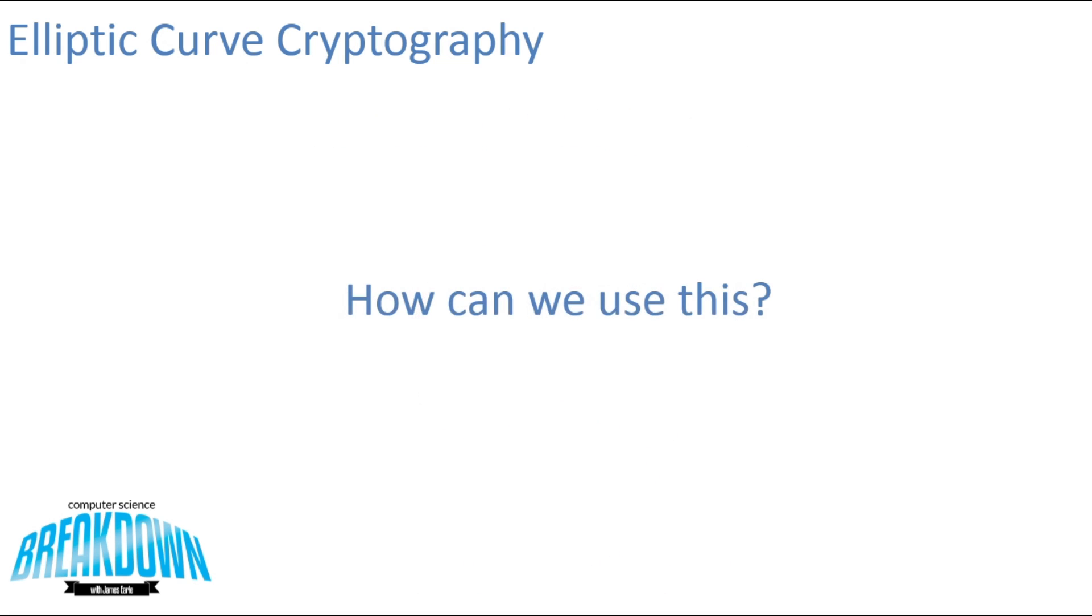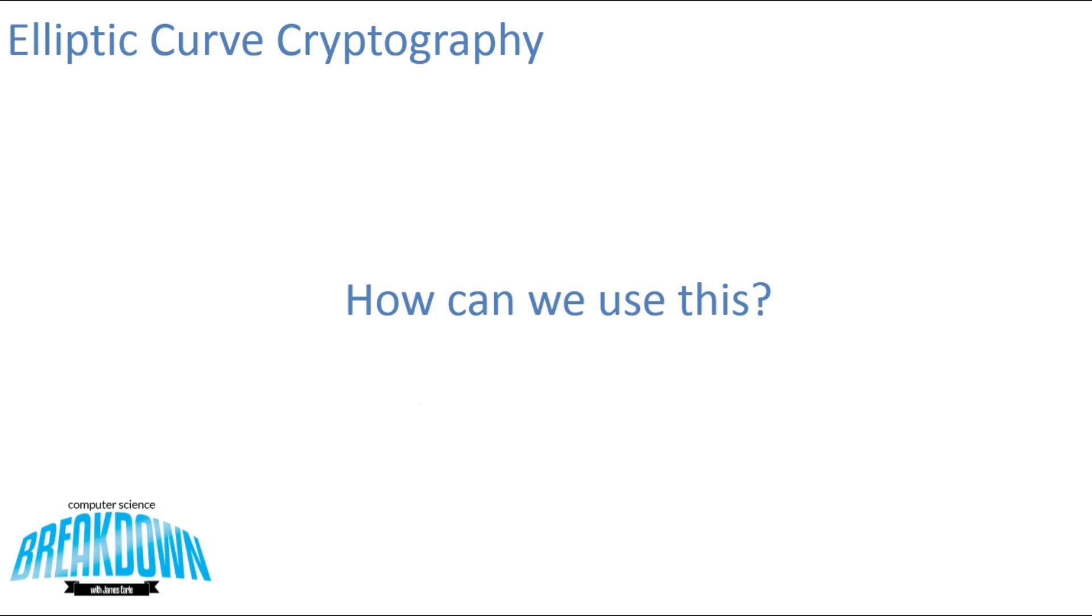So how can we use this to our advantage? There are many applications of the elliptical curve properties in cryptography. In a previous video on Bitcoin's cryptographic implementations, we discussed the elliptical curve digital signing algorithm. Feel free to check that video out if you're interested. But today we're actually going to be going over elliptic curve cryptography as it applies to the Diffie-Hellman algorithm.